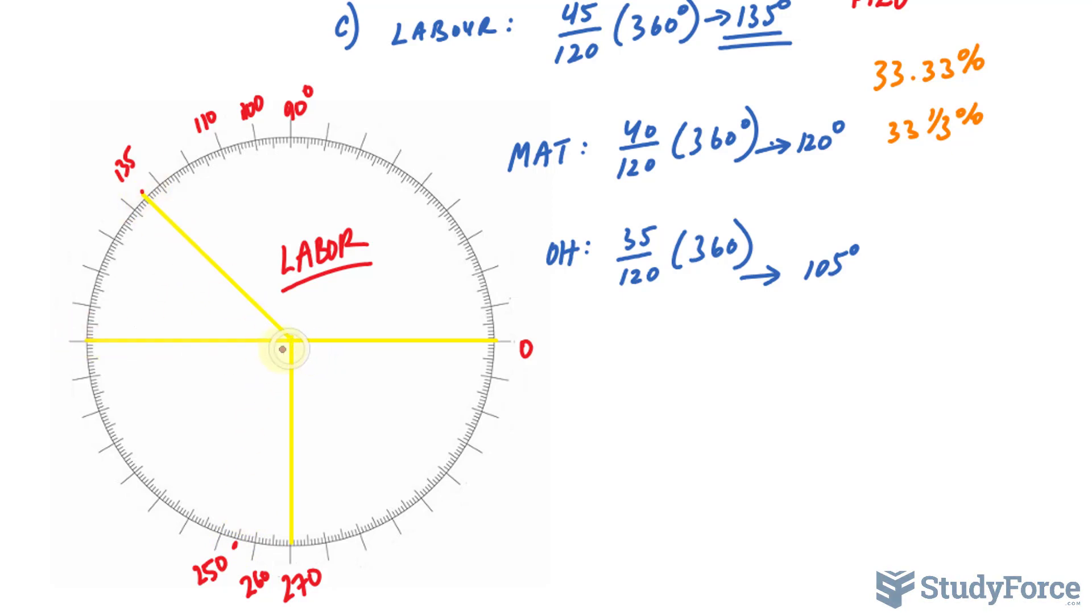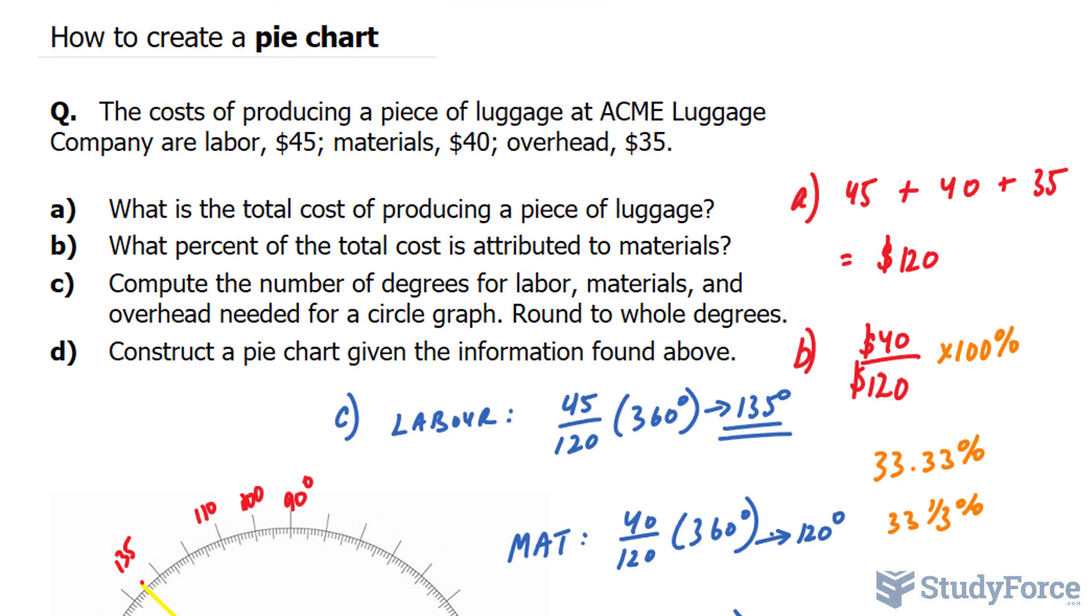And I'll erase this line. So I'll write down that this represents material. Since we only have overhead left, the rest represents overhead. So notice that I'm erasing that final line that I drew initially. This is overhead. And there you have it. That is how to manually create a pie chart given any piece of information.